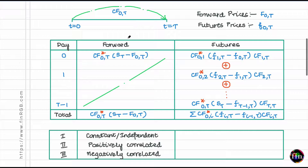Let's begin by looking at a construct we will be using in the analysis: the capitalization factor between two times t=0 and t=T. If you remember our introductory readings in fixed income, the capitalization factor is basically the reciprocal of the discount factor. You can think of it as the future value at time T of a dollar invested into an interest-earning account at time t=0.